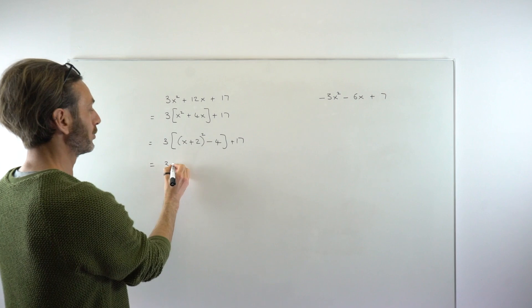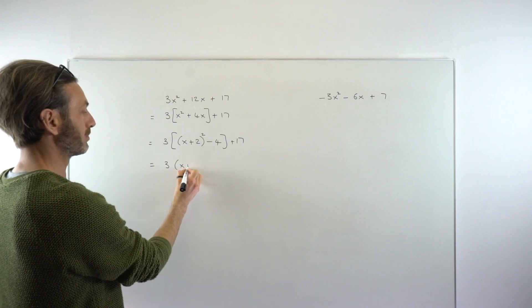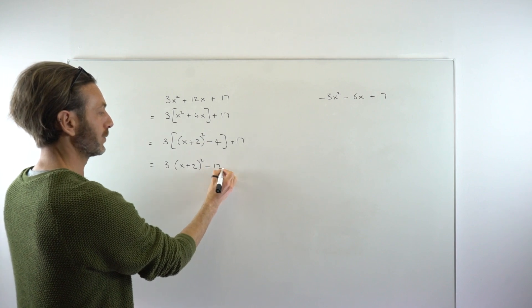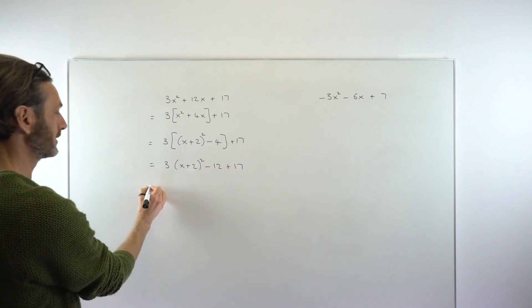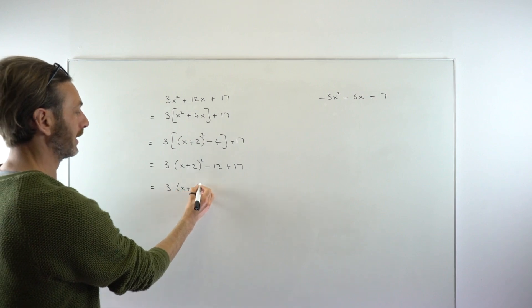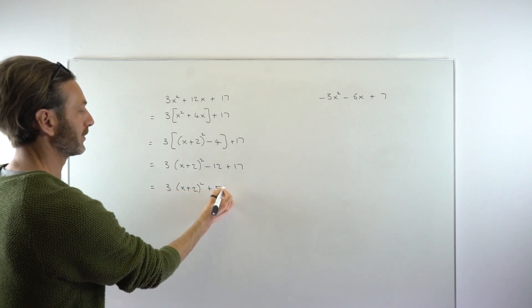We're just going to put the 3 in front of the bracket: 3 bracket x plus 2 squared. 3 times minus 4 is negative 12, and then we've got the 17 on the end. You can just tidy up the end numbers to give you a plus 5 on the end.